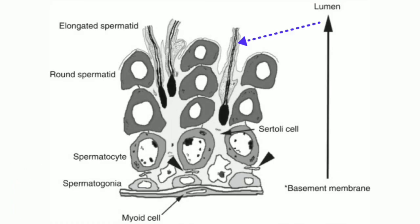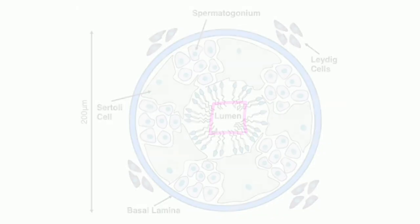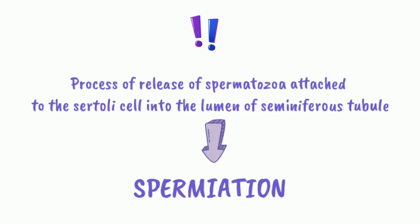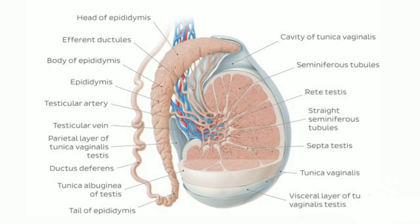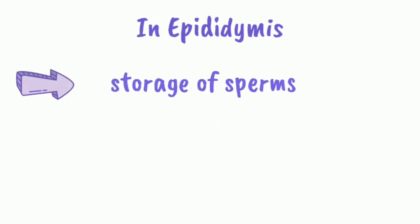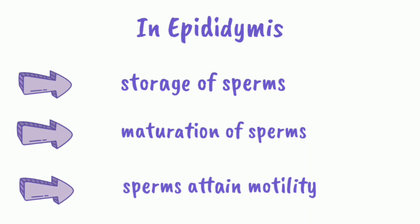The spermatozoa are attached to the Sertoli cells and are released into the lumen of the seminiferous tubules; this process is called spermiation. After that, it is transferred into the epididymis, which is the site for storage, maturation, and where the sperms attain motility.